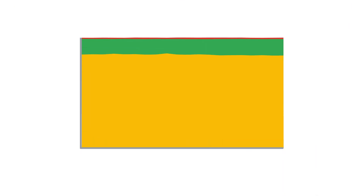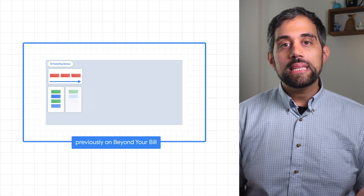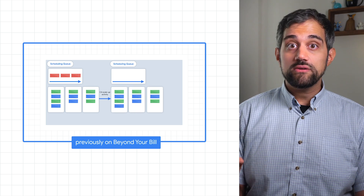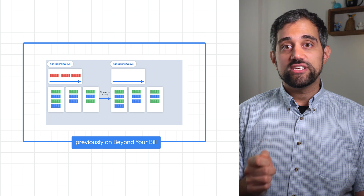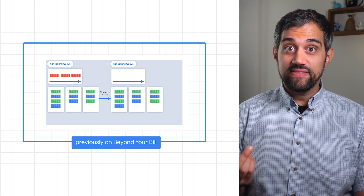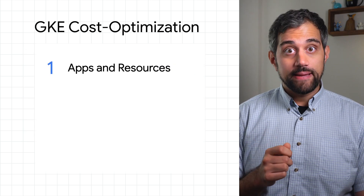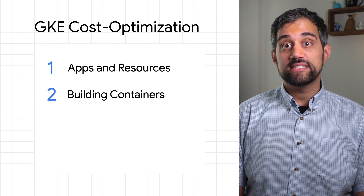Let's go beyond your GKE bill. In the past few videos, we spent a lot of time looking at optimizing GKE through monitoring, machine types, auto-scaling, and more. If you haven't watched the previous videos, I'd suggest checking those out first, since a lot of specific optimization tips in this video and the next builds on those previous concepts. We're talking all about apps today, so I'll start with the resource side, then move on to some best practices for how to build your containers.